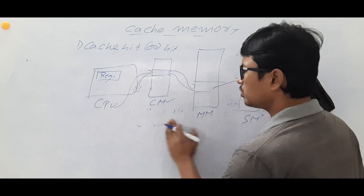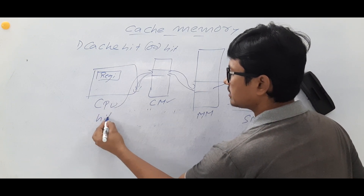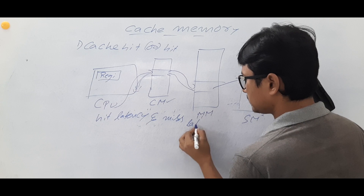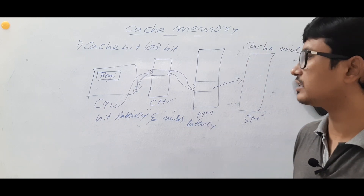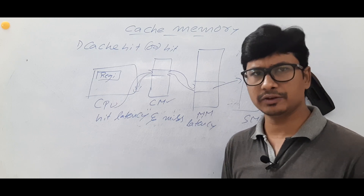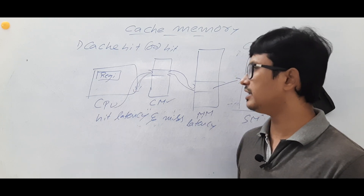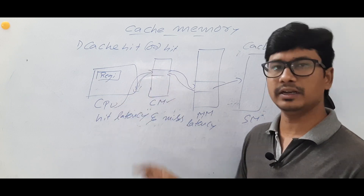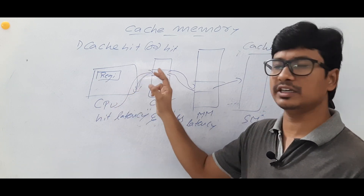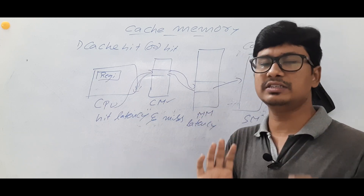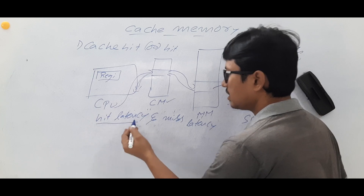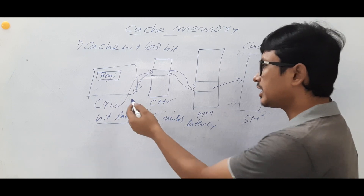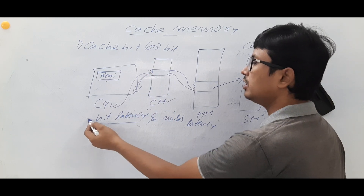Now we have two important terminologies: hit latency and miss latency. Latency means delay — it is measured in terms of time. Hit latency is the time taken for the CPU to search and find whether an element is in the cache memory. If the instruction is available in the cache memory, the time taken to identify it is called hit latency.